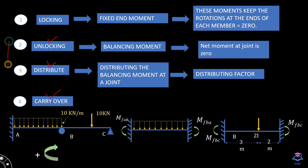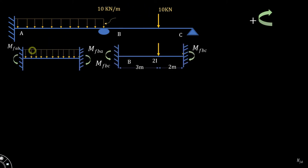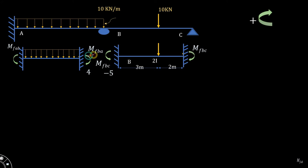The other steps in the Moment Distribution Method are the unlocking process, distribution process, and carryover. Let's discuss them together with an example. Consider a 2-span continuous beam subjected to a UDL and a point load. First, in the locking process, we are going to apply a fixed end moment and lock each and every joint. Let us assume for discussion that MFBA is equal to 4 and MFBC is equal to minus 5.